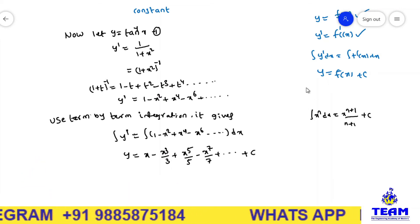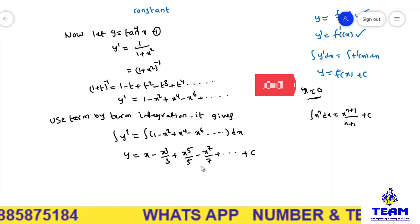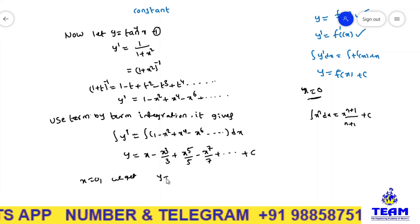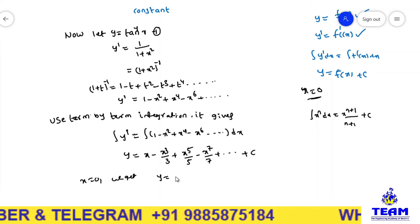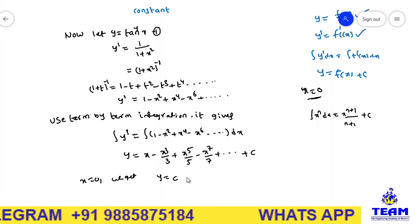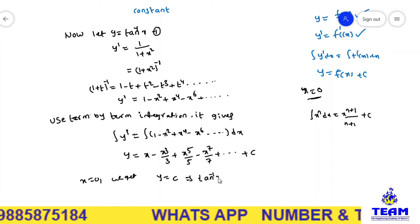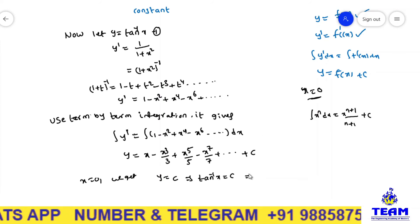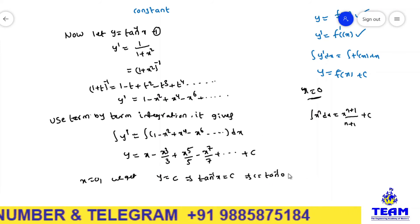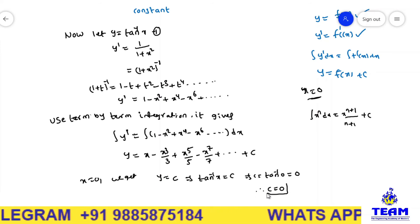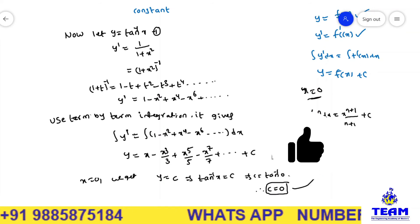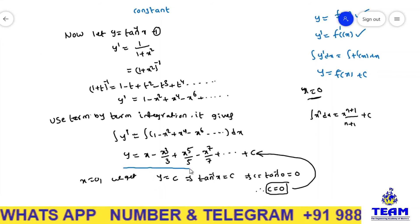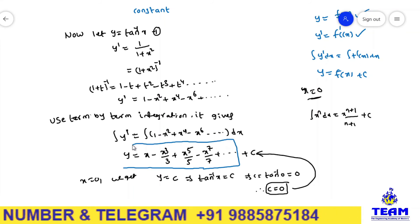Now we substitute x equal to 0 to find the integration constant. Substituting x equal to 0, all terms become 0, so y equals c. Since y is tan inverse x, at x equal to 0 we have c equal to tan inverse 0, which is 0. Therefore, the integration constant c is 0. Substituting back, we get y equal to x minus x cubed by 3 plus x to the power of 5 by 5 minus x to the power of 7 by 7 plus so on.